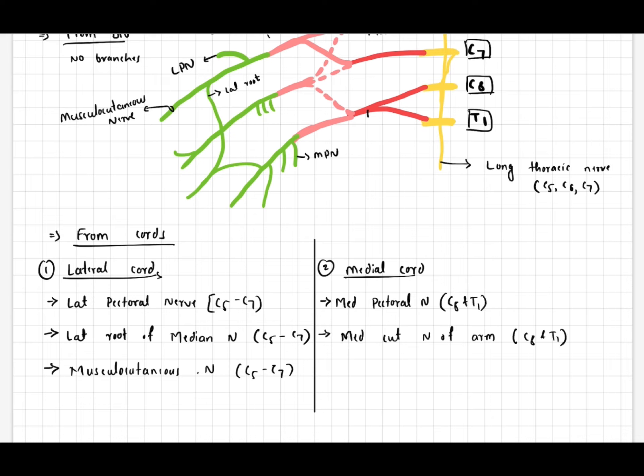From medial cord: medial pectoral nerve, medial cutaneous nerve of the arm C8 and T1, medial cutaneous nerve of the forearm C8 and T1, medial root of the median nerve, and ulnar nerve with root value C7, C8, and T1.